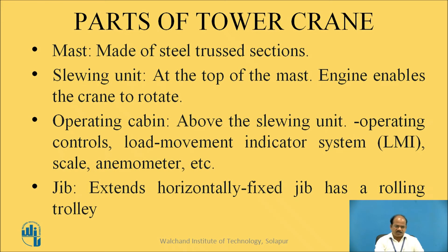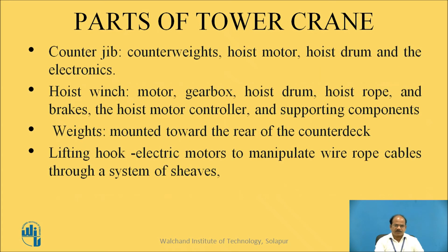The parts of the tower crane include: the mast made up of steel truss, the slewing unit at the top of the mast, an engine that enables the crane to rotate, the operating cabin above the slewing unit with indicators, and the jib. The counter jib is important as it provides counterweight, along with the hoist motor, hoist drum, and associated electronics. The hoist winch is very important — it drives the rope acting on the load. Components include motor, gearbox, hoist drum, hoist rope, and brakes. Counterweights are mounted towards the rear of the counter deck, and a lifting hook is also present. Wire rope cables through a system of sheaves act with an electric motor or other energy source.